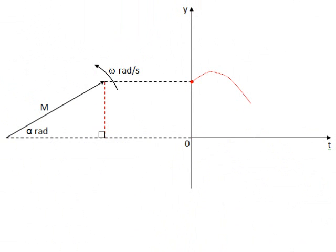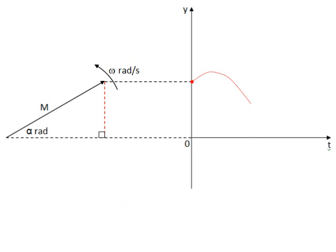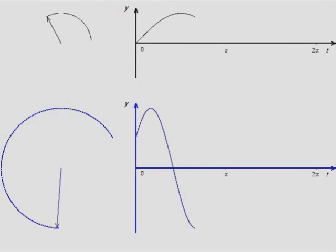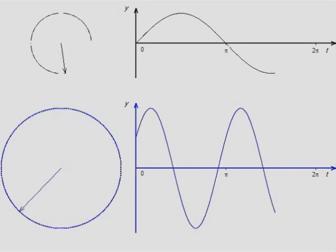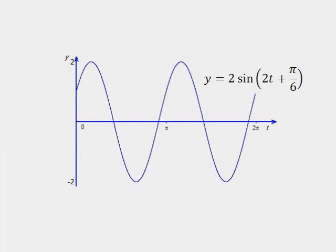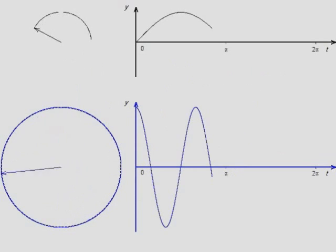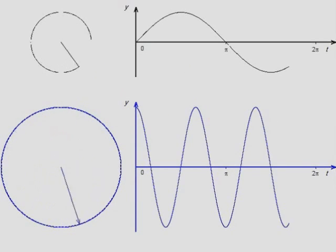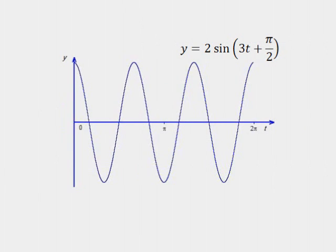The general equation for any sine wave is given by y equals m sine of omega t plus alpha, where m equals magnitude, omega equals angular velocity, and alpha is equal to the phase angle. The equations for these last two sine waves are y equals 2 sine of 2t plus pi over 6, and y equals 2 sine of 3t plus pi over 2.